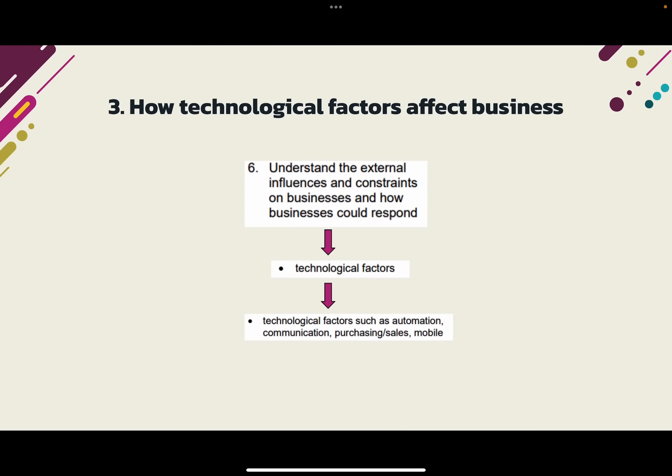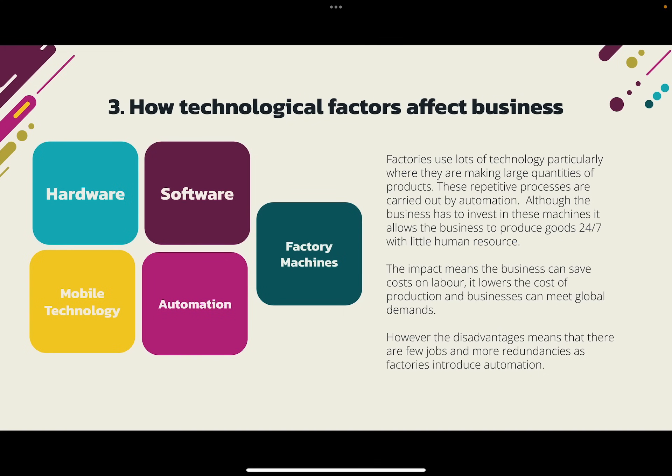Theme 3 is how technological factors affect business. This comes under Learning Outcome 6 — understanding the external influences and constraints on business and how businesses could respond. Drilling down to technological factors, the spec mentions automation, communication, purchasing, sales, and mobile as areas where technology features in businesses. The theory slide covers hardware, software, mobile technology, automation, and factory machines — these are the things you could be asked about in Section B.